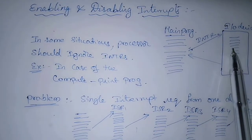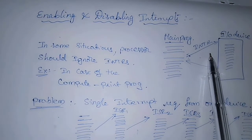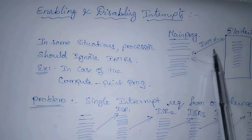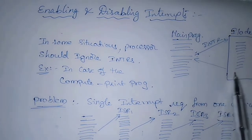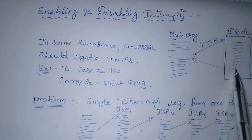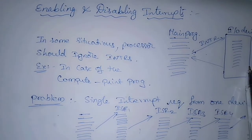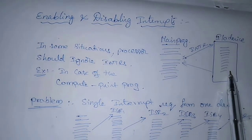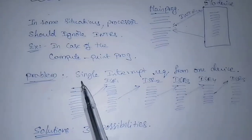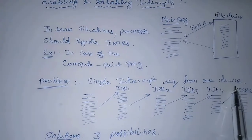So an interrupt request from the printer should be accepted only if there are output lines to be printed. After printing the last line of a set of N lines, interrupt should be disabled until another set becomes available for printing.